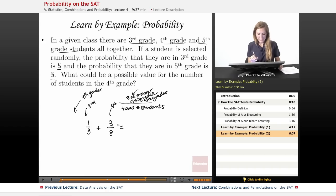So if I add these two, I just find a common denominator, and I end up with 17 over 24 is my likelihood of either picking 3rd or 5th grade.